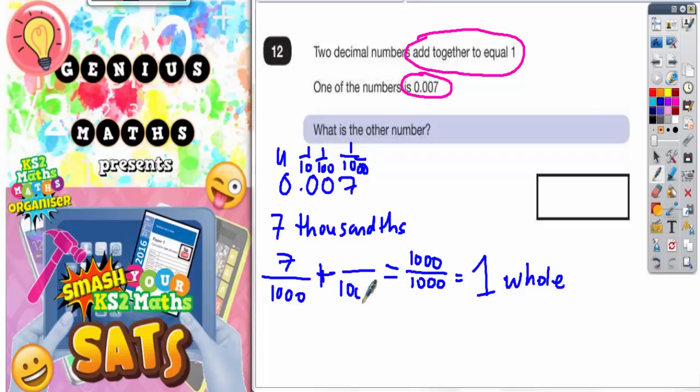So what would you need to add on to seven thousandths to get a thousand thousandths? Well, it's going to be some extra amount of thousandths. If you take seven off of a thousand, you get 993, because seven plus nine hundred ninety-three would make a thousand. So seven thousandths plus nine hundred ninety-three thousandths make a thousand thousandths, which is a whole one.